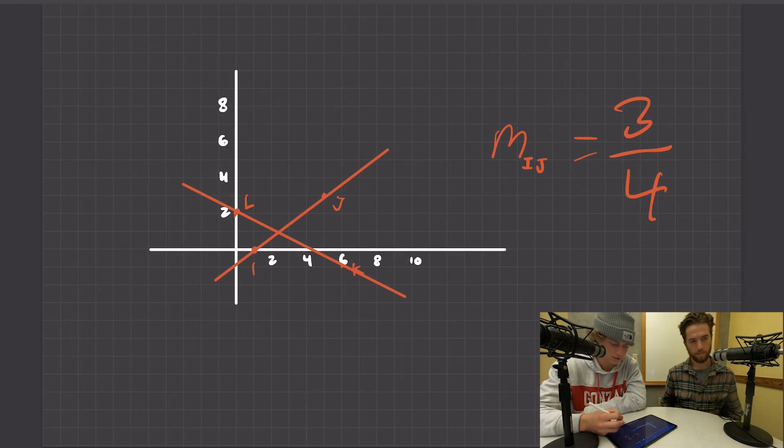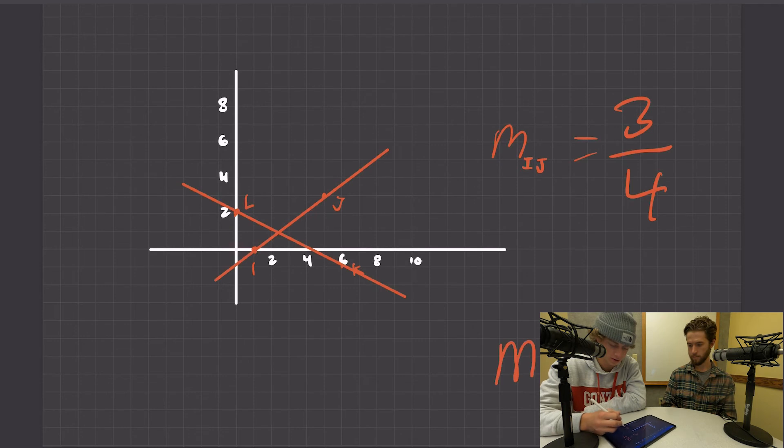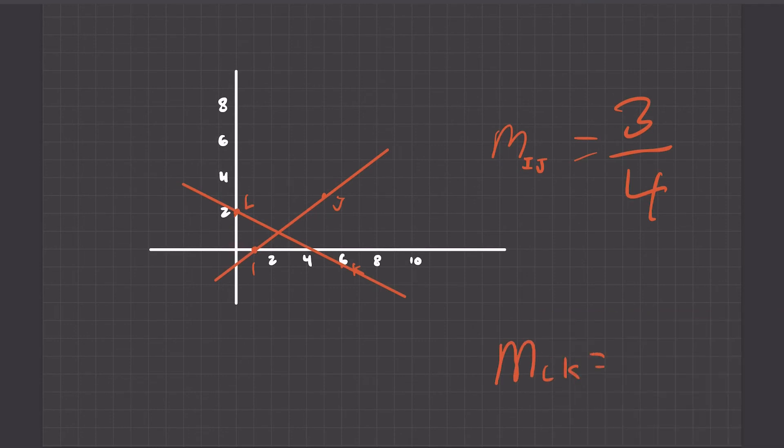Okay, so then for LK, the measure of LK is one, two, three. Three, and one, two...six. Three and six. So they're not perpendicular if these are the same. Would they be? Oh, this needs to be negative.